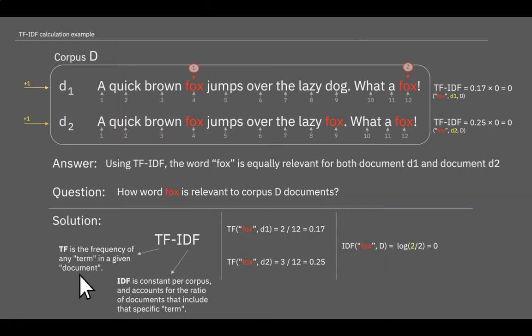TF is a simple choice to use the raw count of a term in a document. And the IDF, inverse document frequency, is a measurement of how much information the word provides in our corpus.